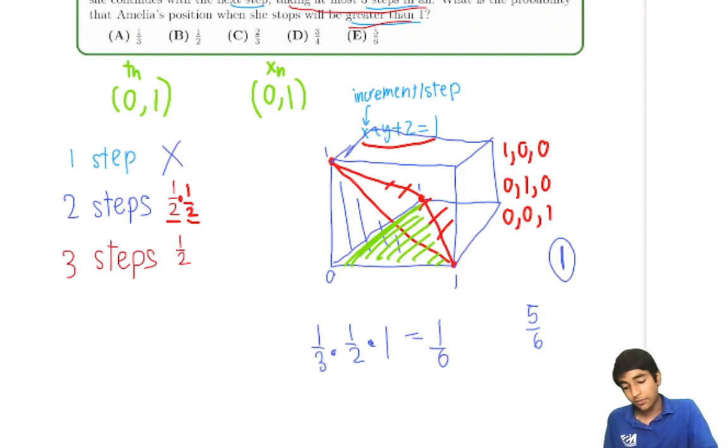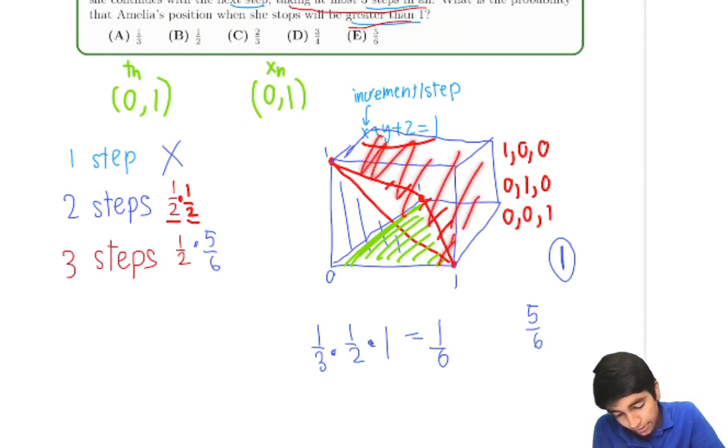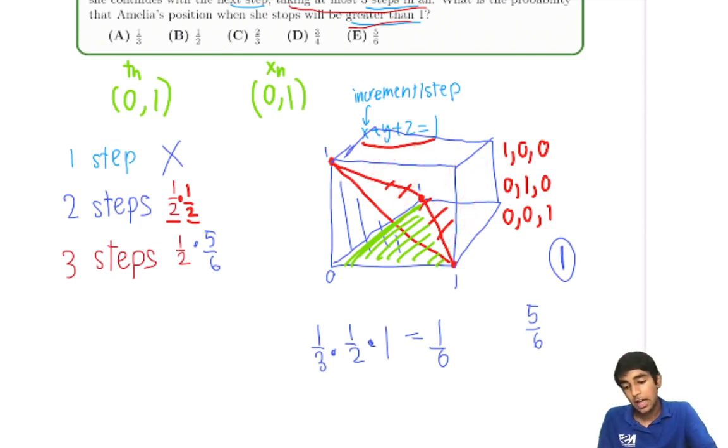And five sixths divided by 1 is five sixths. So there's a five sixths chance that the increment will be more than 1 after 3 steps. It's just the volume of this not-pyramid region divided by the total volume of the cube. And now we just add this up, one fourth, we add these up, we get 8 twelfths, which is 2 thirds. C.